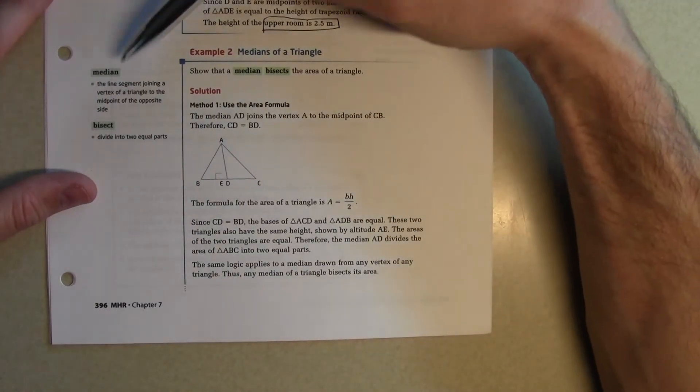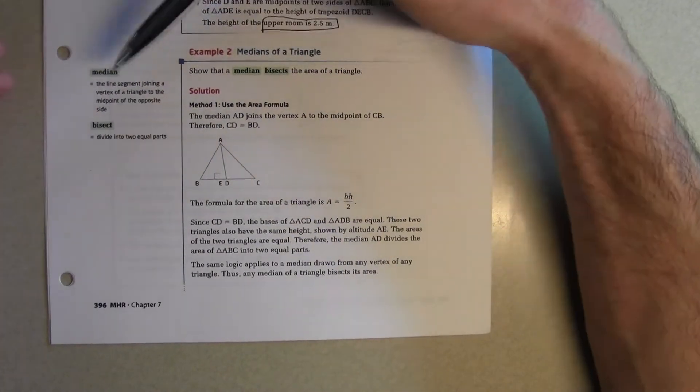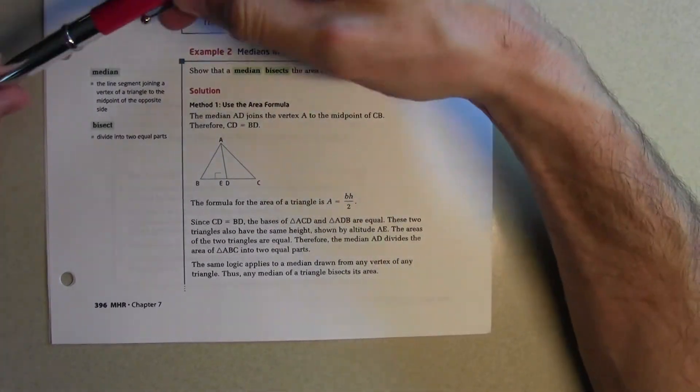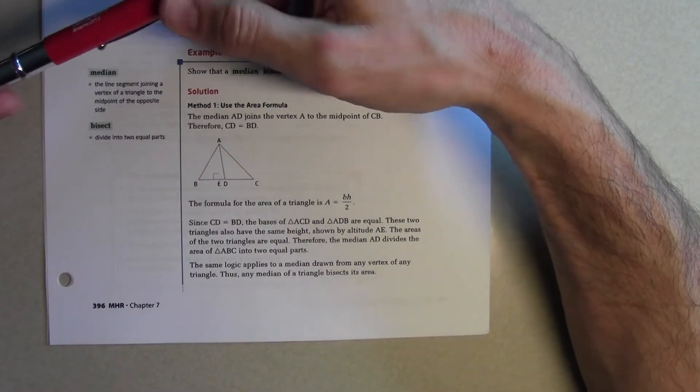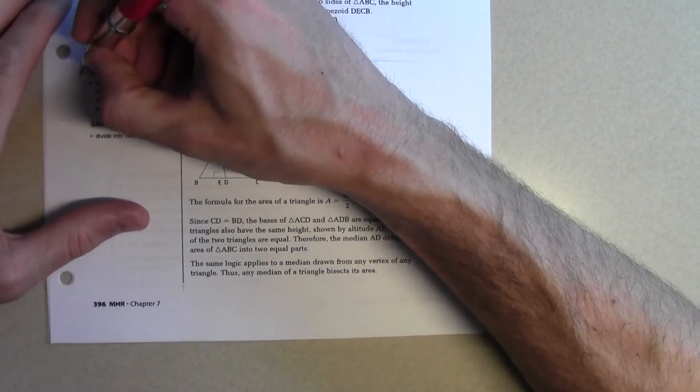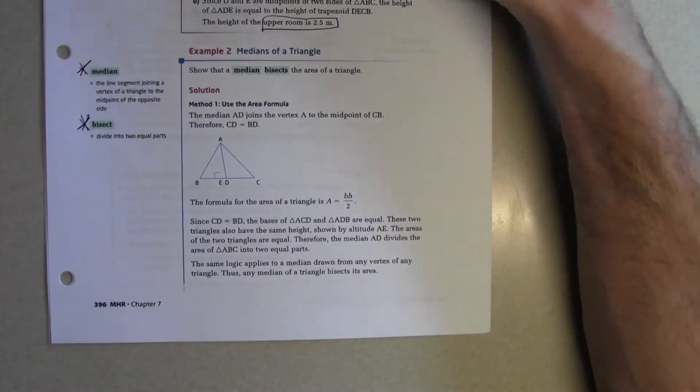Two definitions here. Median. It's the line segment joining a vertex of a triangle to the midpoint of the opposite side. Bisect means you divide two equal parts. Very important definitions here. Also use them quite a bit in grade 10.